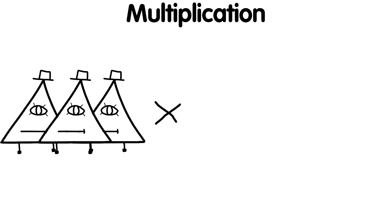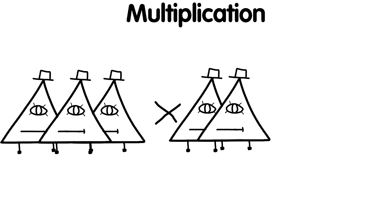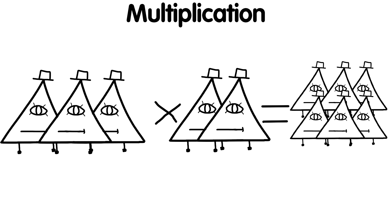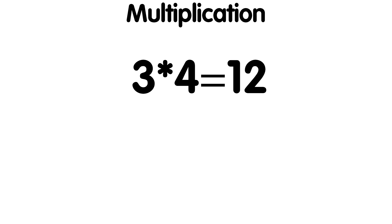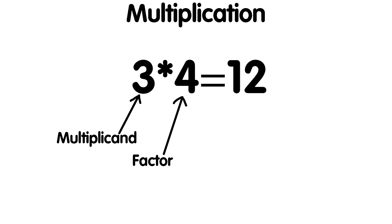Multiplication is an operation in which one number, the multiplier, is increased by a number of times equal to another number, the second multiplier. The result is the product. In multiplication 3 times 4, the number 3 is the multiplier, 4 is the second multiplier, and 3 times 4 equals 12, so the number 12 is the product.